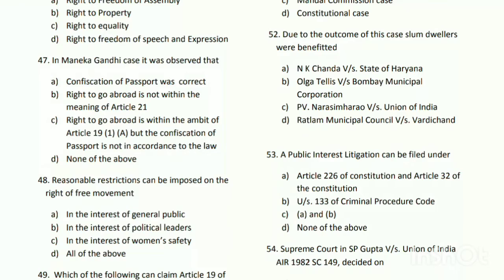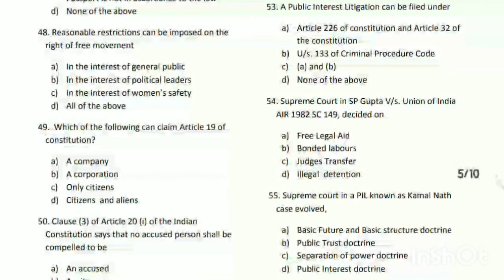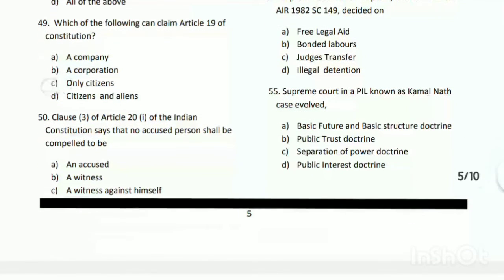Question number forty-eight: reasonable restrictions can be imposed on the right of free movement under what condition? The answer is A - in the interest of the general public. Question number forty-nine: which of the following can claim Article 19 of the Constitution - a company, a corporation, only citizens, or citizens and aliens?